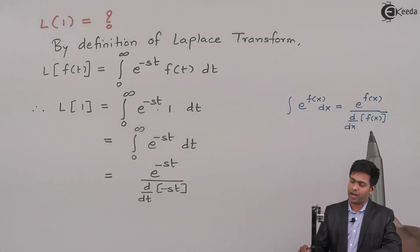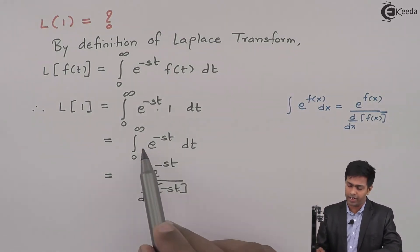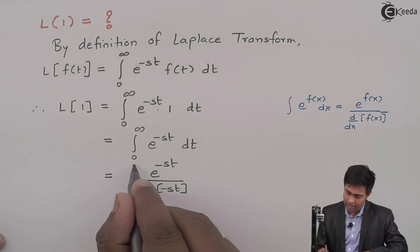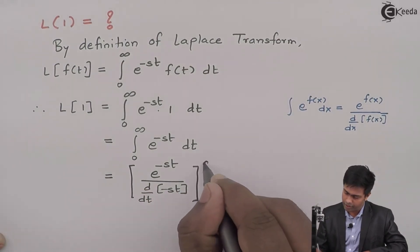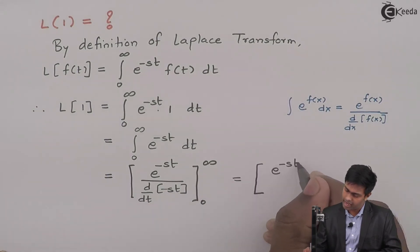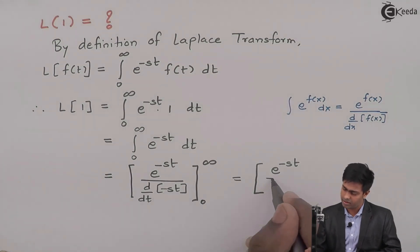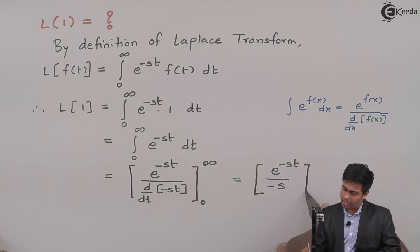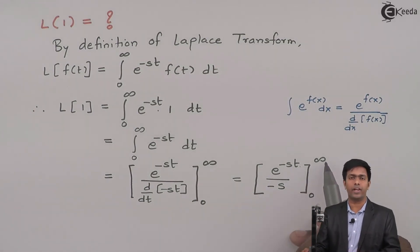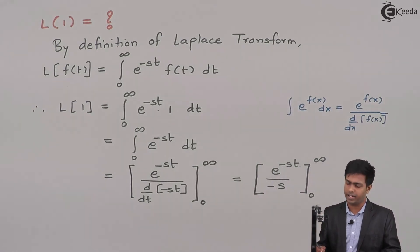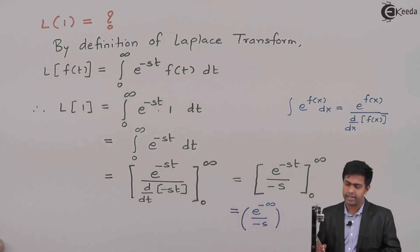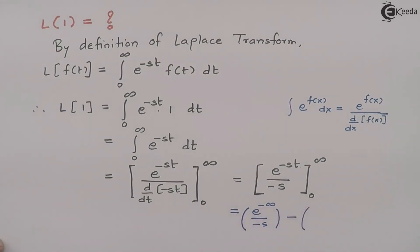In the formula we find the derivative with respect to x, but here we have integration with respect to t, so I will find the derivative with respect to t. We have the limits from 0 to infinity. The derivative of minus st is minus s, so we get e raised to minus st upon minus s, evaluated from 0 to infinity. Substituting the upper limit infinity, we get e raised to negative infinity upon minus s.